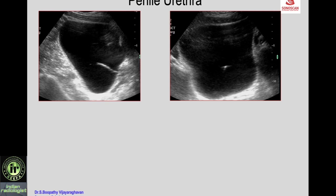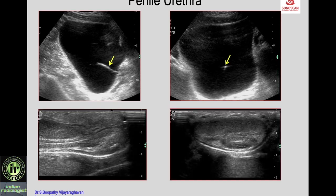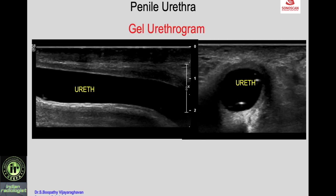In another patient presenting with dysuria and hematuria, a linear echogenic lesion from the bladder enters the urethra. Scanning the penis shows a linear echogenic structure in the urethra — on dorsal and axial scans you see the lesion within the corpus spongiosum. This was a foreign body — a blade of a plant leaf introduced by the patient himself.